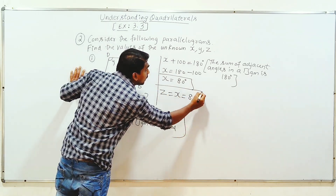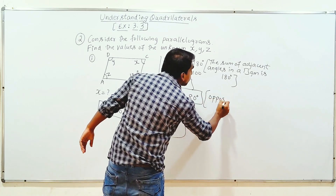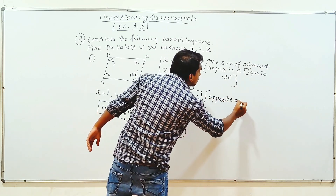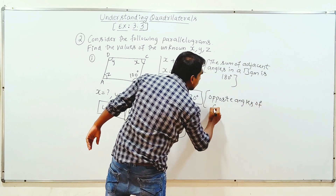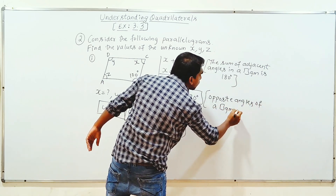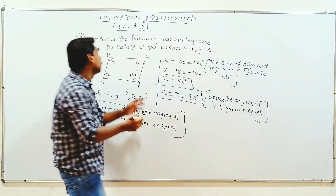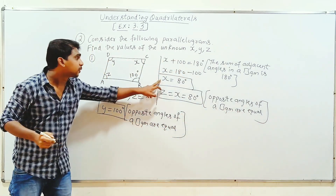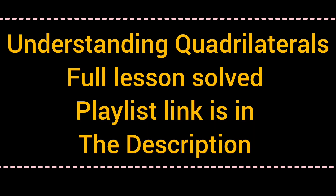So the reason is the opposite angles of a parallelogram are equal. Therefore, x, y, and z are all found. Thank you.